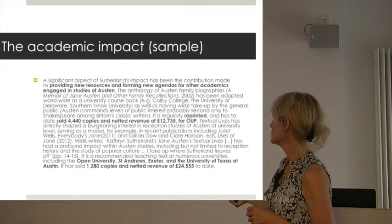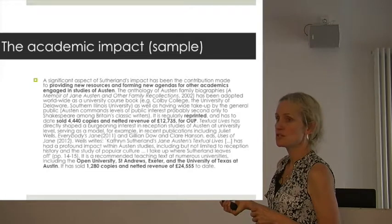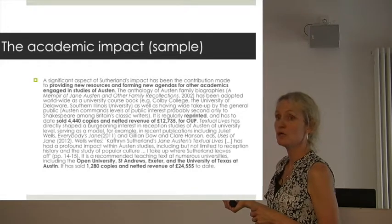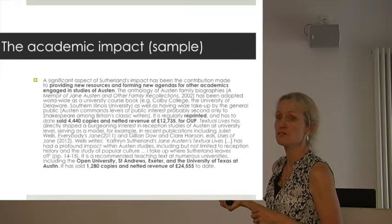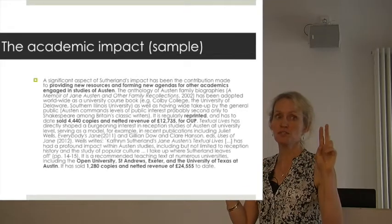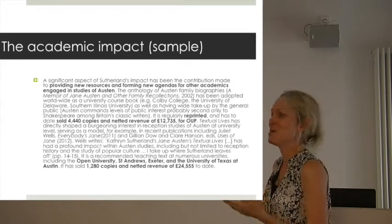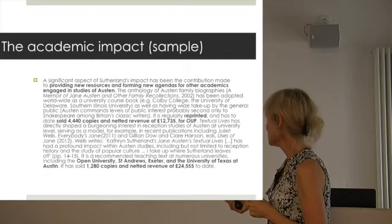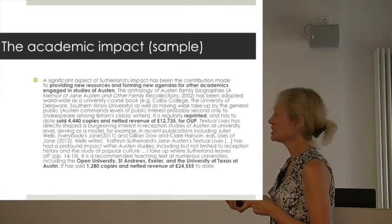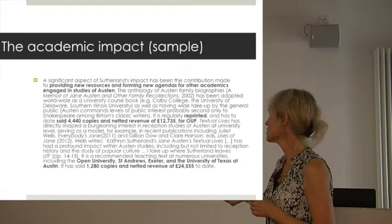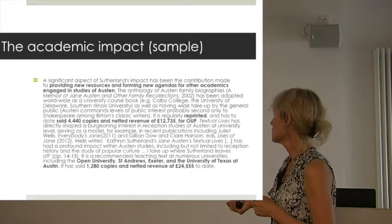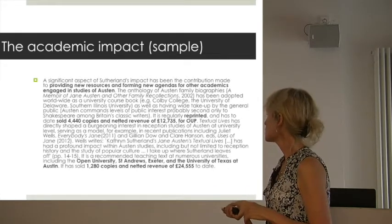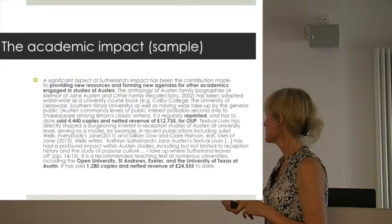How do you evidence that? Regular reprinting, 4,440 copies — not a lot for a trade book, but it's a lot for an academic book. Netted revenue of that amount for OUP — they were willing to give that figure. The trade presses were not willing to give it, so what you got instead was a descriptive statement saying that it performed well economically for X press, details not given. Then you get the way in which it influenced colleagues in thinking about reception history as a new angle on Jane Austen at the time it happened. Again, sample places that are using it, more in the folder, and sales and needed revenue.